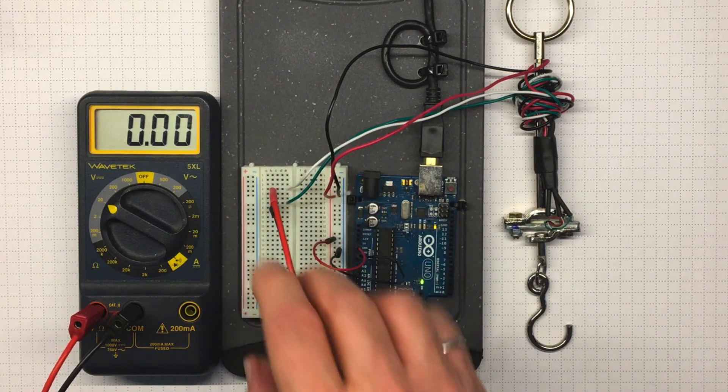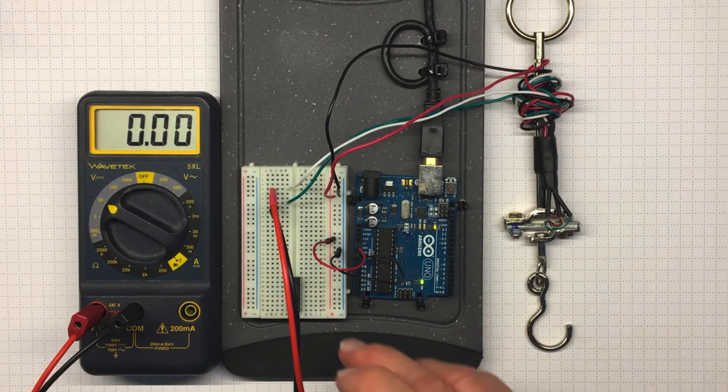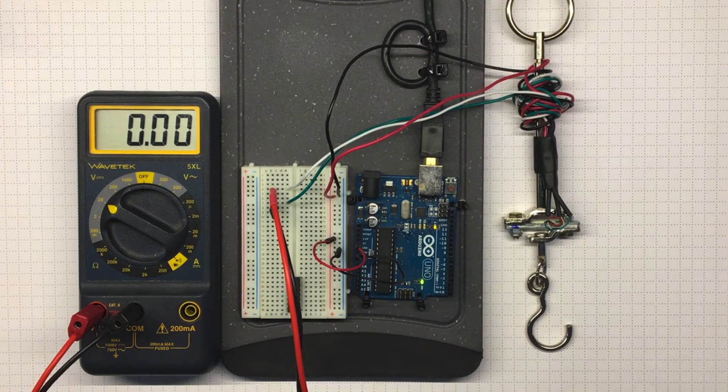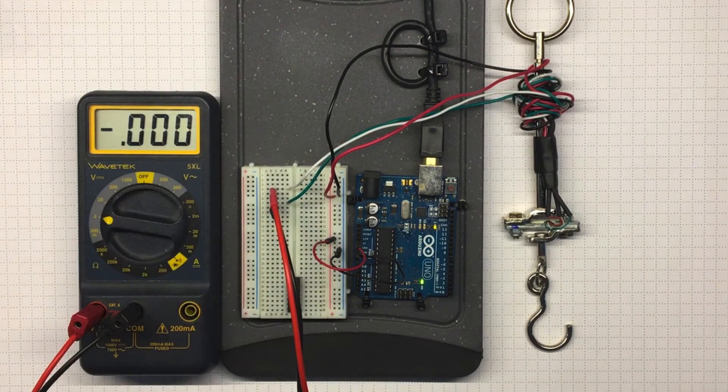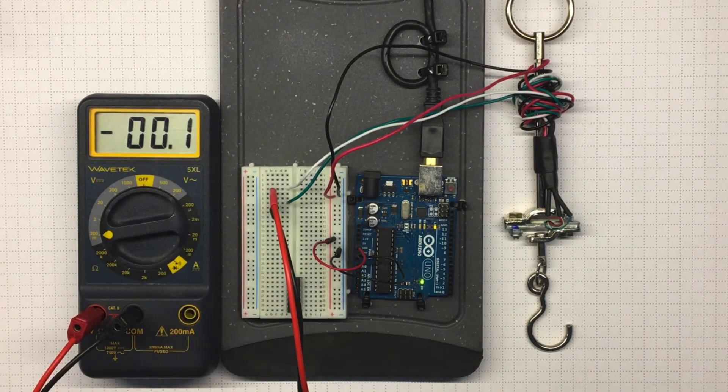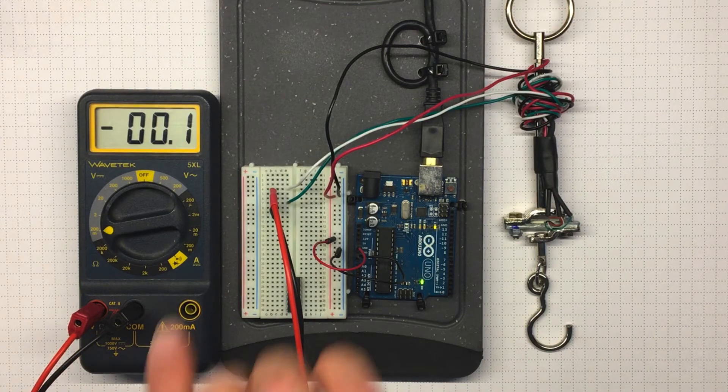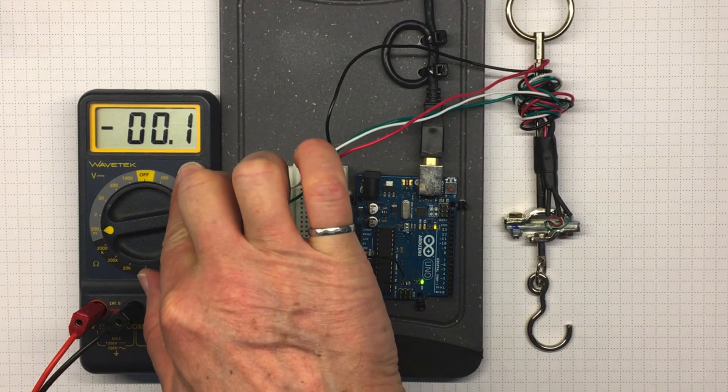If I measure the difference between the two of them, that certainly looks exactly the same. Try a finer scale. The 2 volt scale, still looking like no difference. The 200 millivolts scale, just a tiny difference.